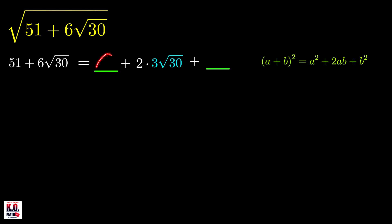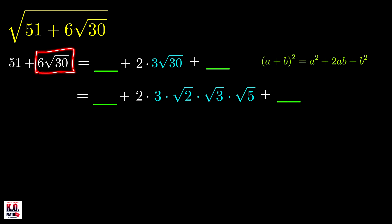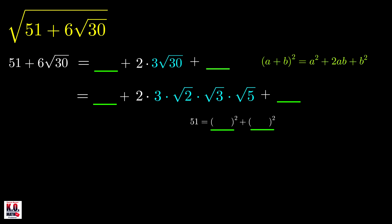To easily find these terms, we're going to do prime factorization for the number outside of the radical and for the number inside the radical. We can write 3 times the square root of 30 as 3 times square root of 2 times square root of 3 times square root of 5. Since this is our middle term, the sum of a² and b² must equal 51. Therefore we want to divide this into two factors whose sum of squares equals 51.